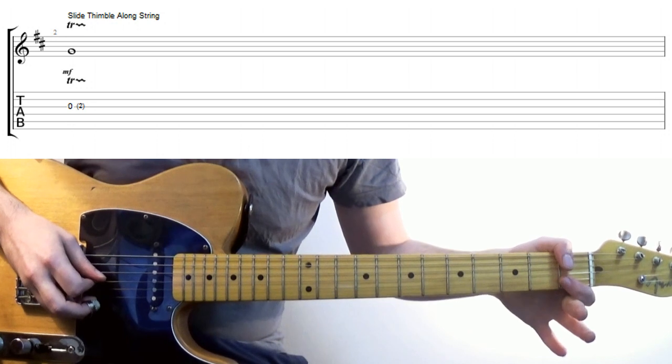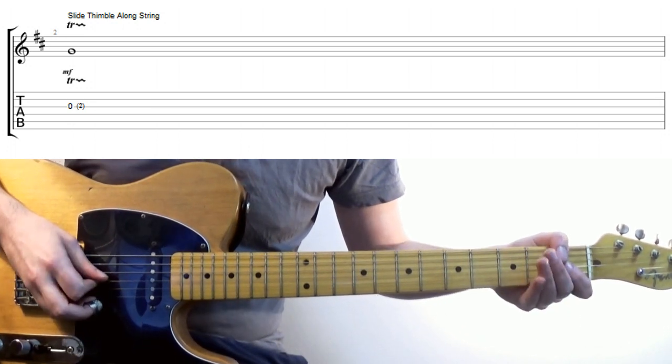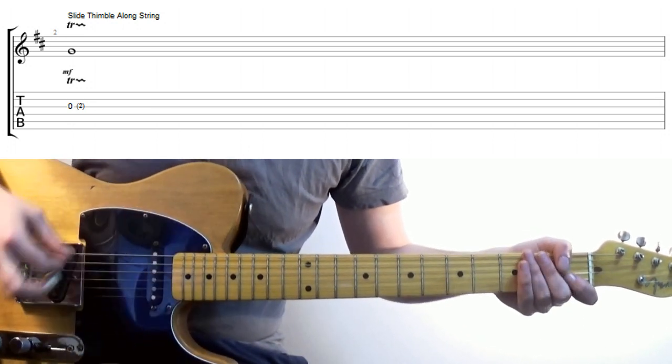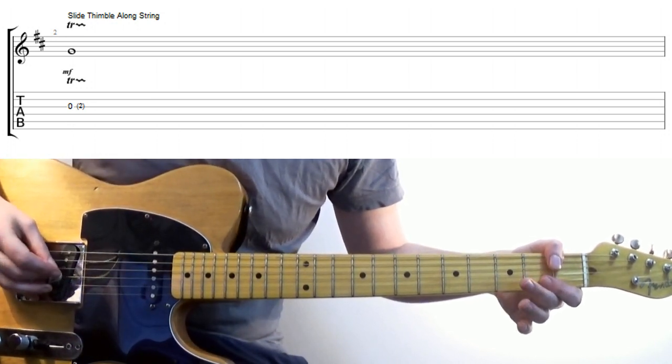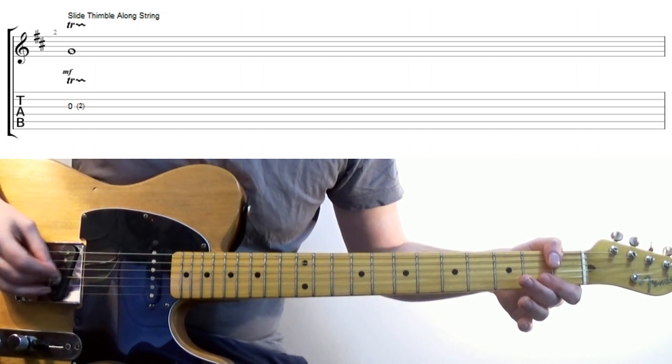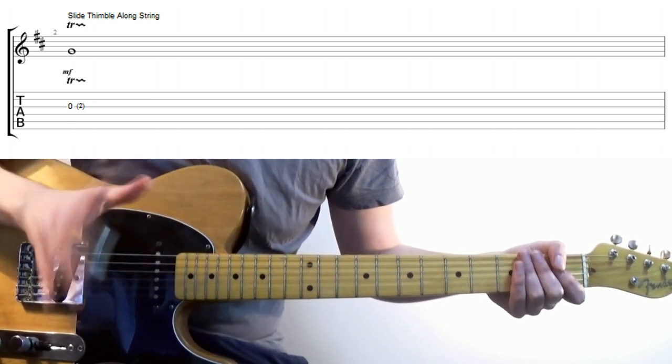So we know we can raise the pitch by moving up a fret, so the open string, then up a semitone, but we can also raise the pitch down at the bridge. Why? What wizardry is this?